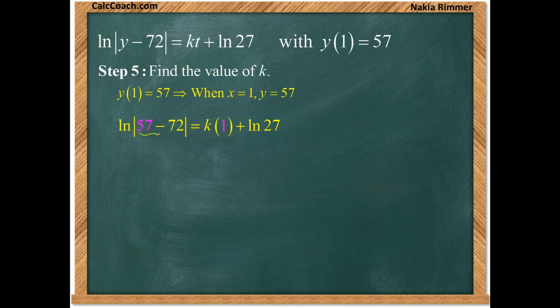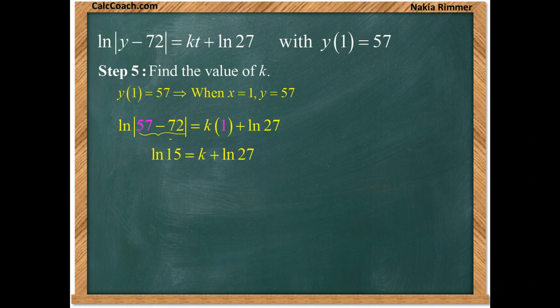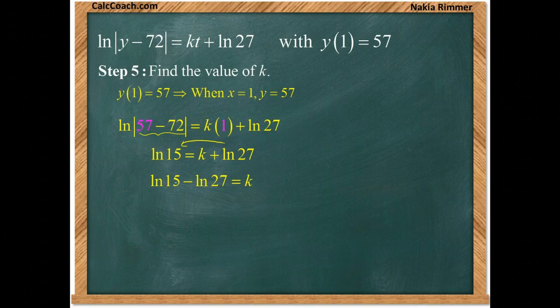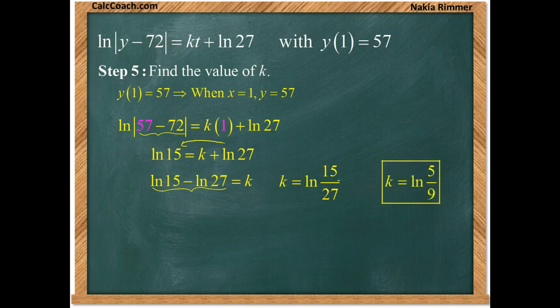When you subtract these you get 15. We'll ship the log of 27 over by subtracting it. But you have a log minus a log, you can combine them into one log. And these guys share something in common, we can reduce by dividing by 3, leaving us with the natural log of 5/9. So we have the K and we have the C.